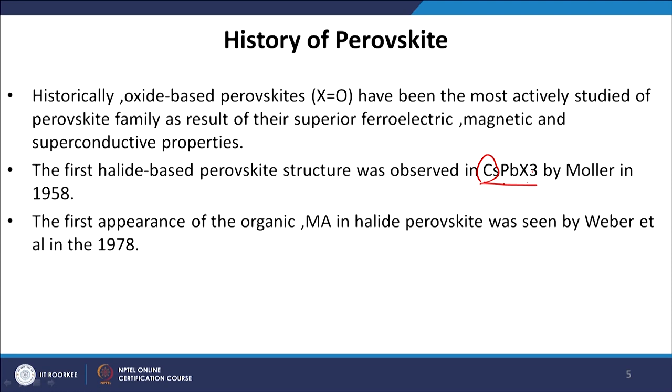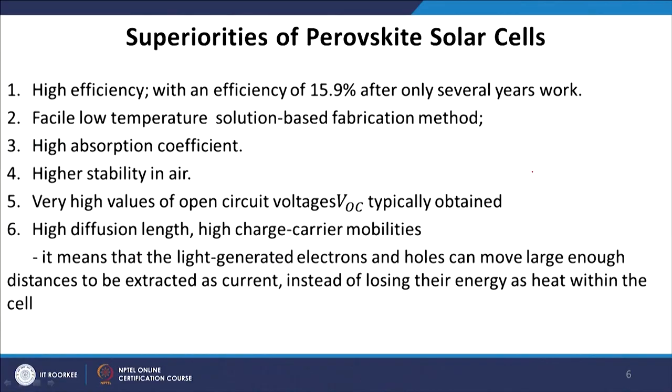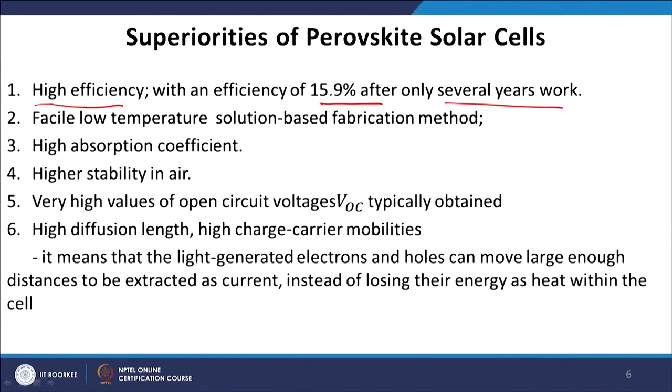The first appearance of the organic methylammonium (MA) in halide perovskite was seen by Weber et al. in 1978. If you look at the number of research papers in this field, it has been exponentially increasing over the last decades. This material provides advantages over conventional inorganic materials. The efficiency is already at 22%, increasing day by day, starting from 3.8% in 2009 to 15.9% by 2015–2016 — about 4 to 5 years of research.